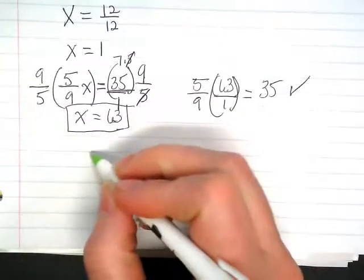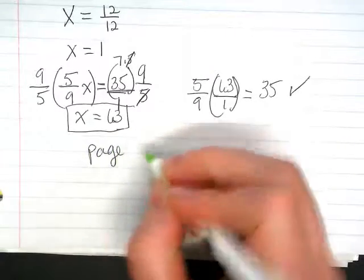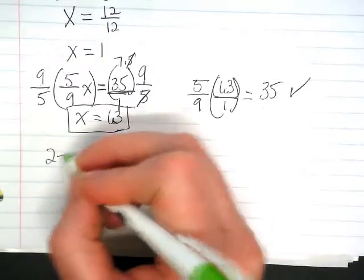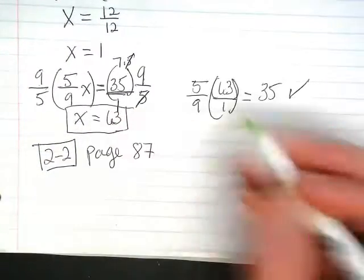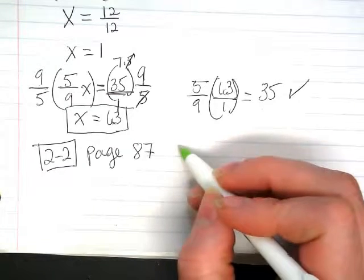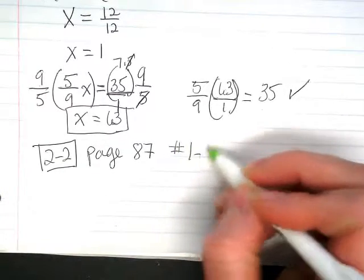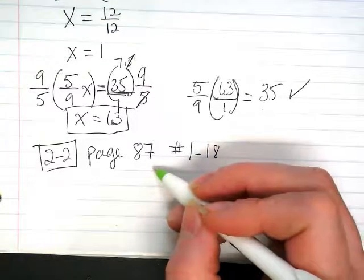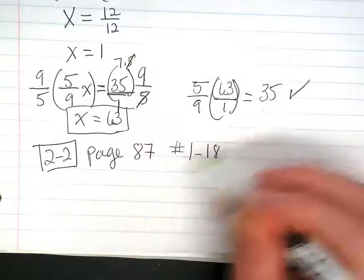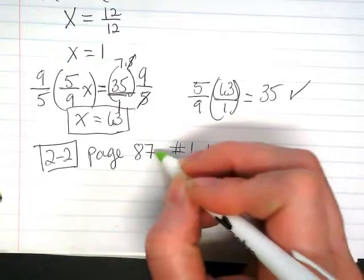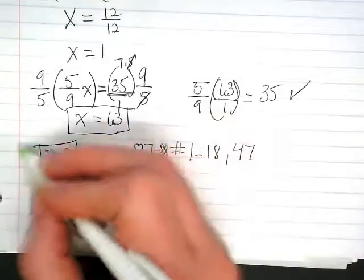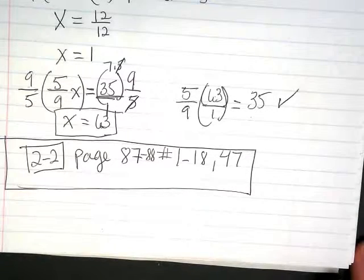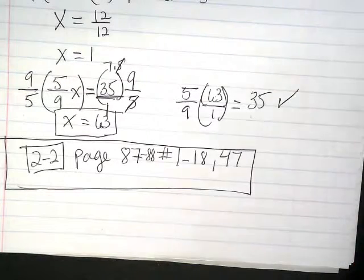So the problems I want you to practice today, pretty minimal. We're going to go to page 87. This is 2-2 again, so make sure your heading on your binder paper says 2-2. And you're going to do problems 1 through 18, and turn the page and also do problem 47. So it's really 87 to 88. That's your practice work today. We will check both 2-1 and 2-2 when I am back on Wednesday.